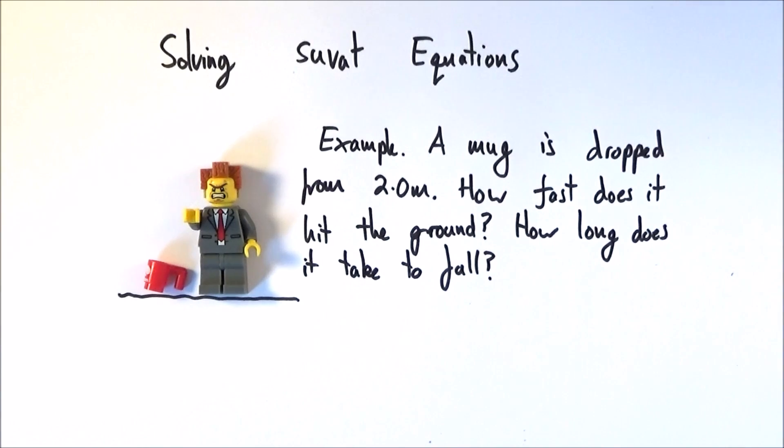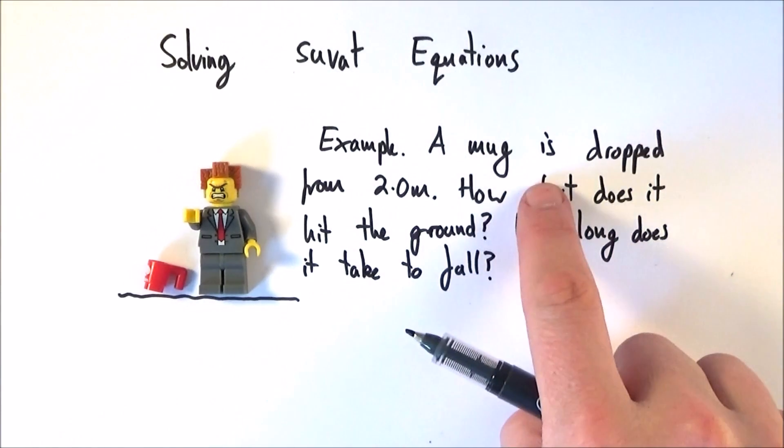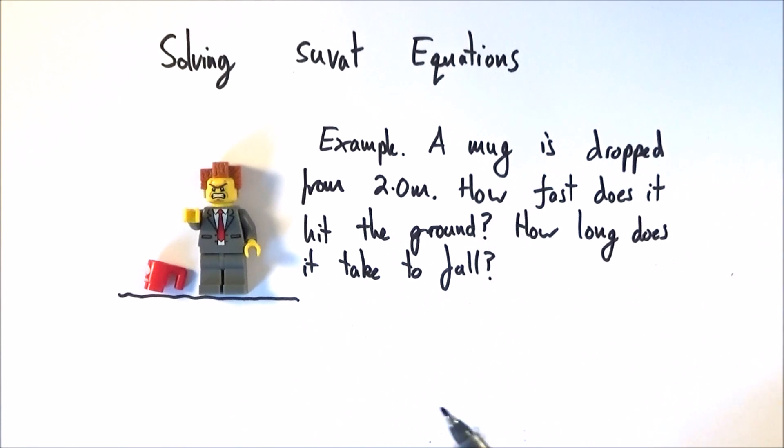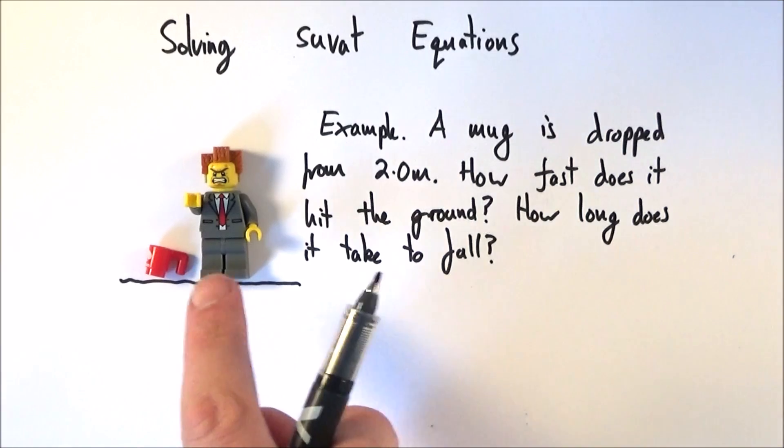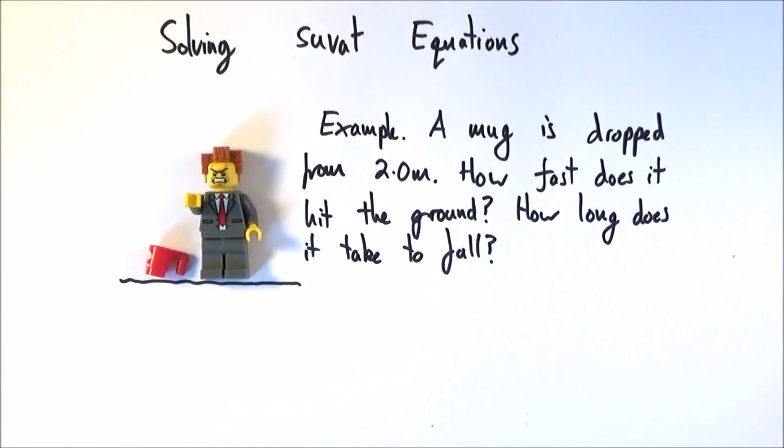So here we have an example of a SUVAT kind of question. A mug is dropped from perhaps the height of two meters. How fast does it hit the ground and how long does it take to fall? Well, a fairly straightforward example, and this is my approach. First of all, we need to think about maybe what we know, drawing a diagram, some assumptions we can make. So first of all, we're going to take this kind of real-world problem and simplify it into the kind of physics language that we need.